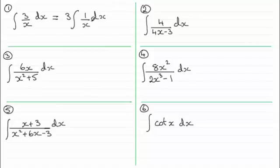And if I do that, then I now know that I'm going to get three times the natural log of the modulus of that f of x there, which is just simply x. And then we've got plus the constant c.